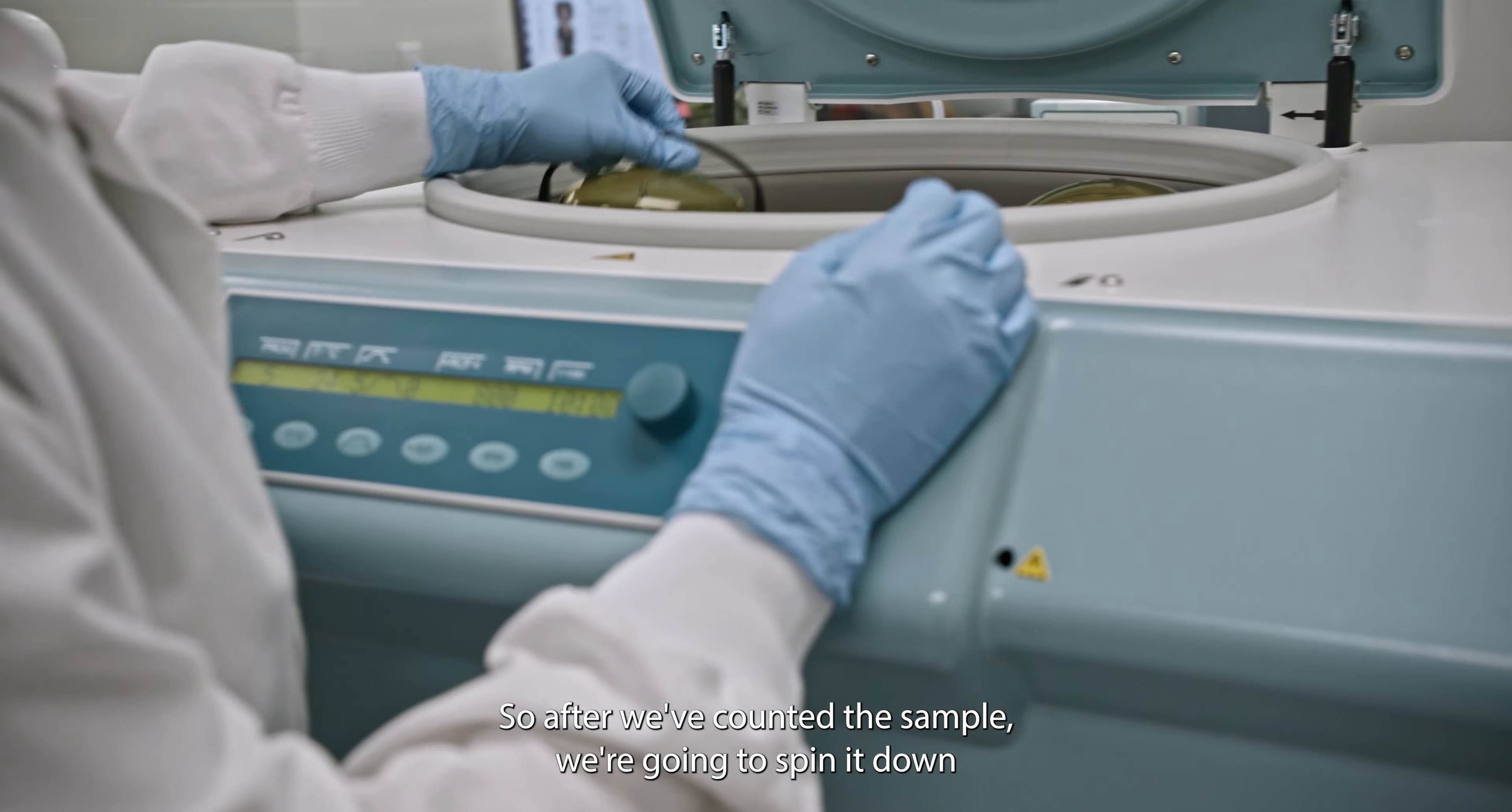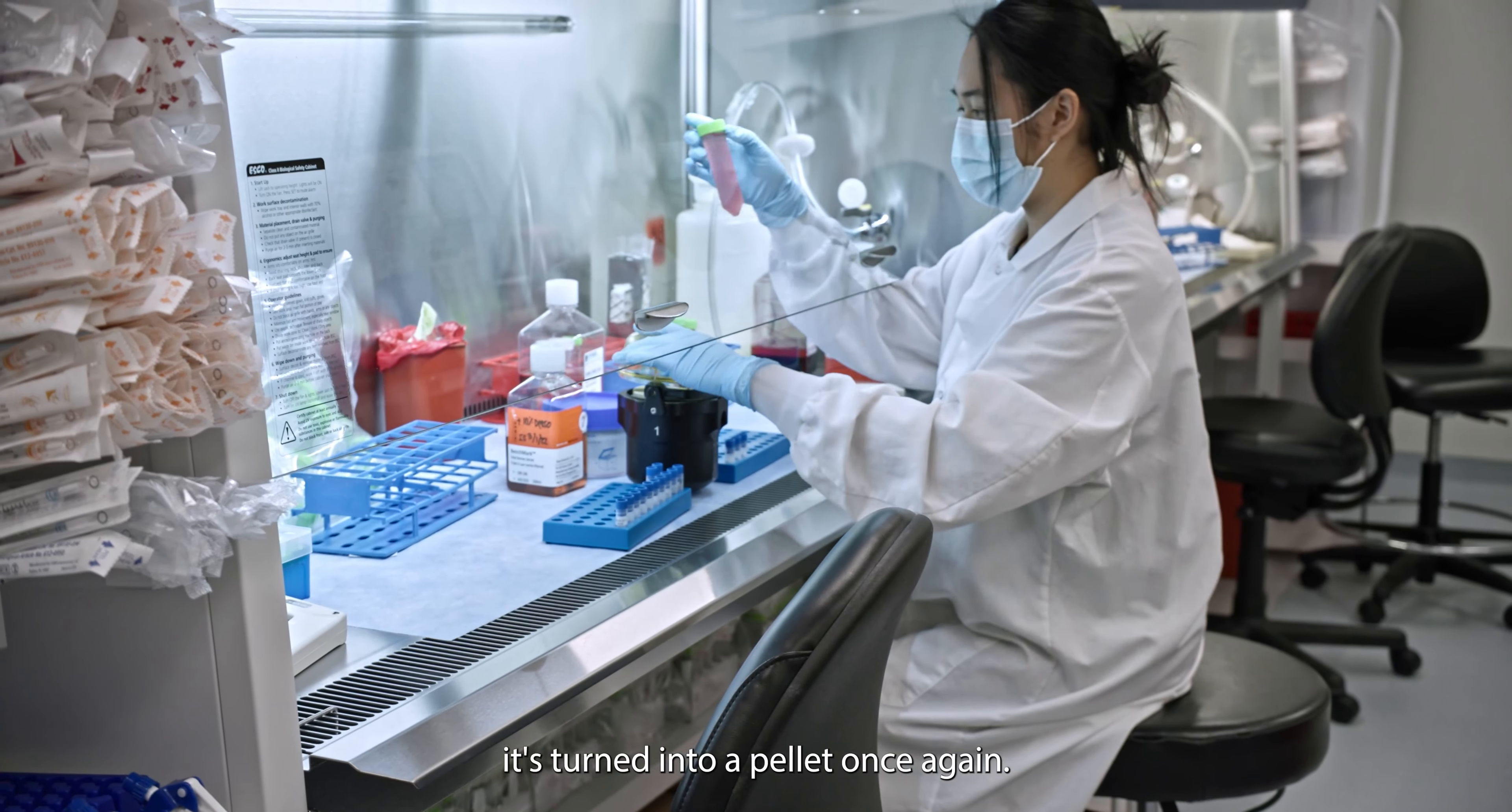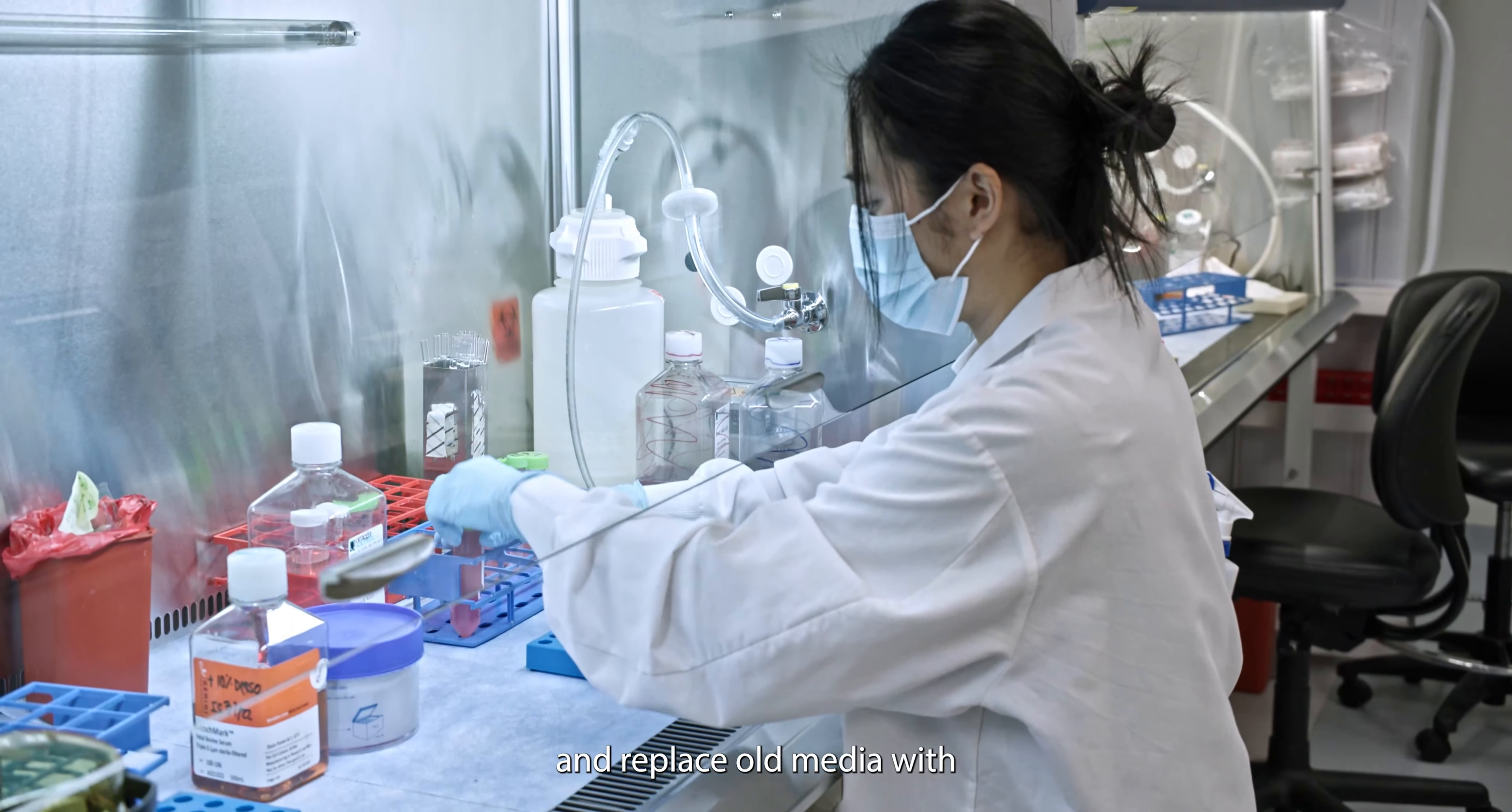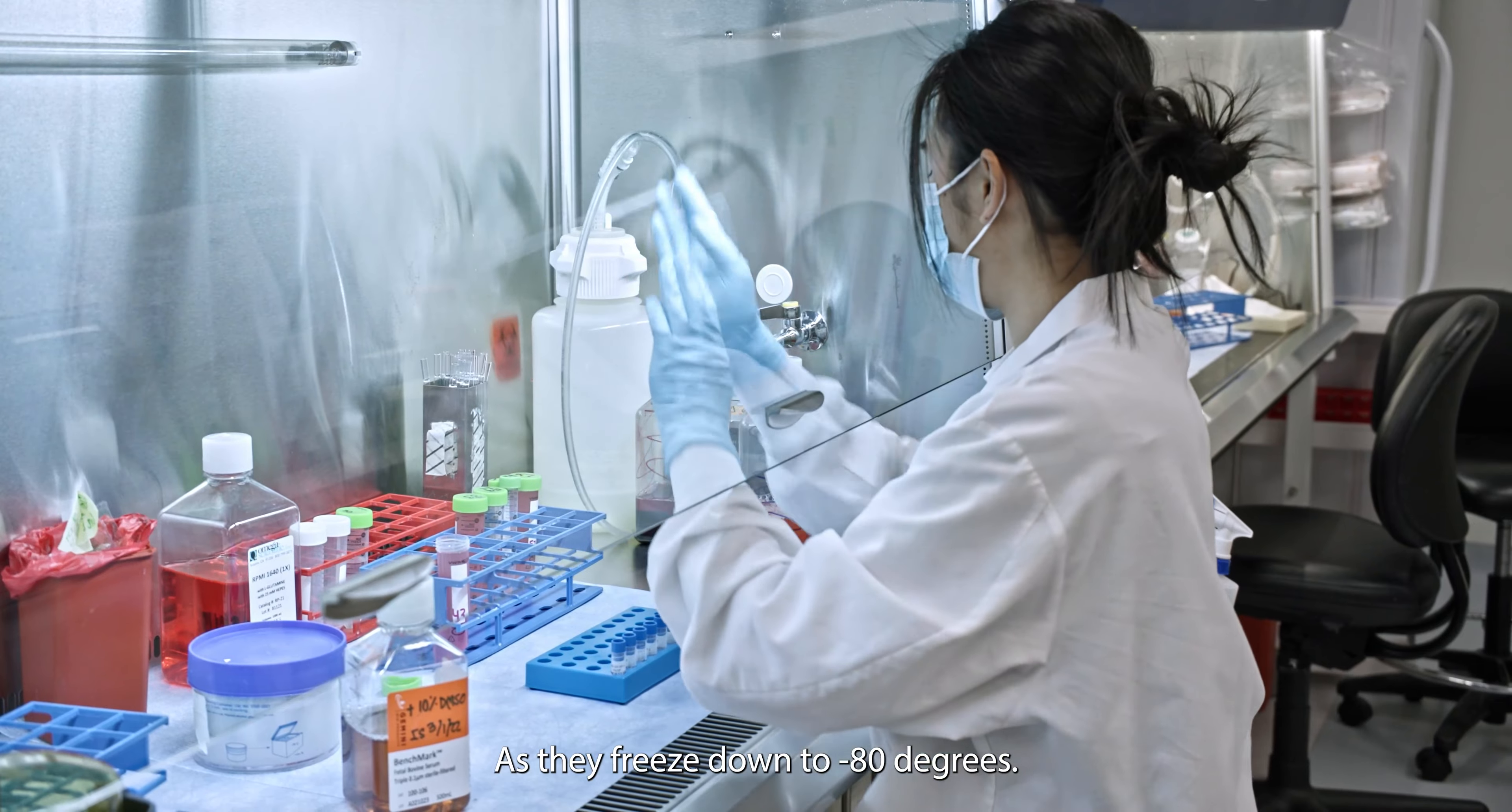So after we've counted the sample, we're going to spin it down. And you'll see that it's turned into a pellet once again. What we're going to do is vacuum off all the extra media. And replace the media with this FBS, which will keep the cells safe as they freeze down to minus 80 degrees.